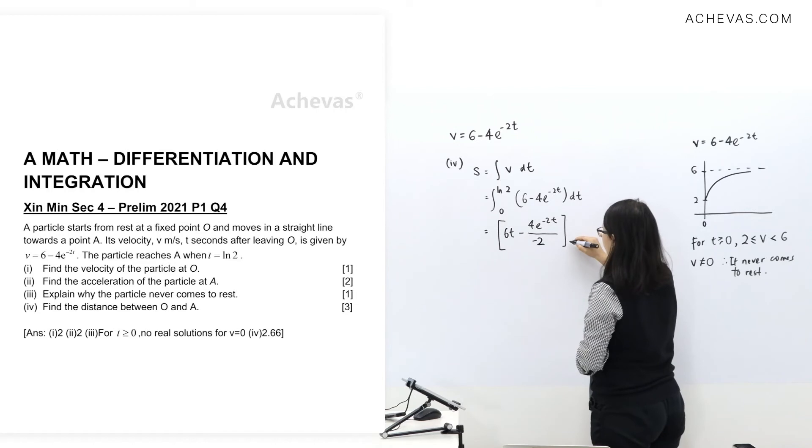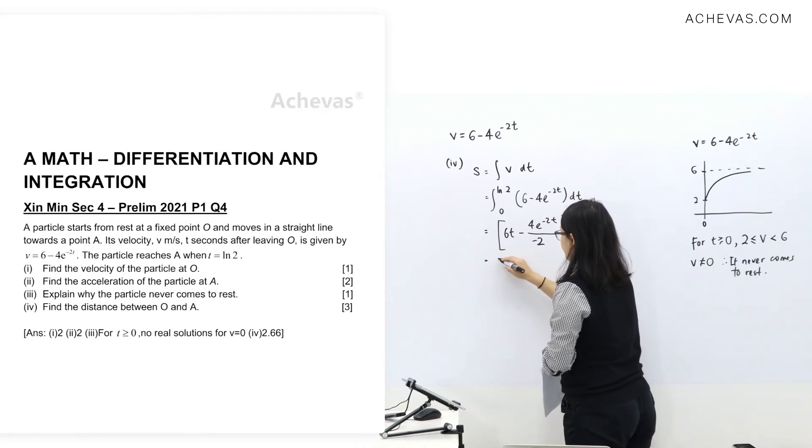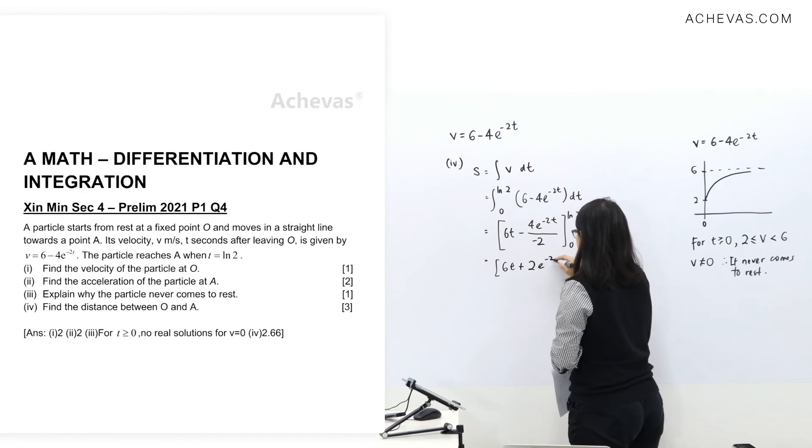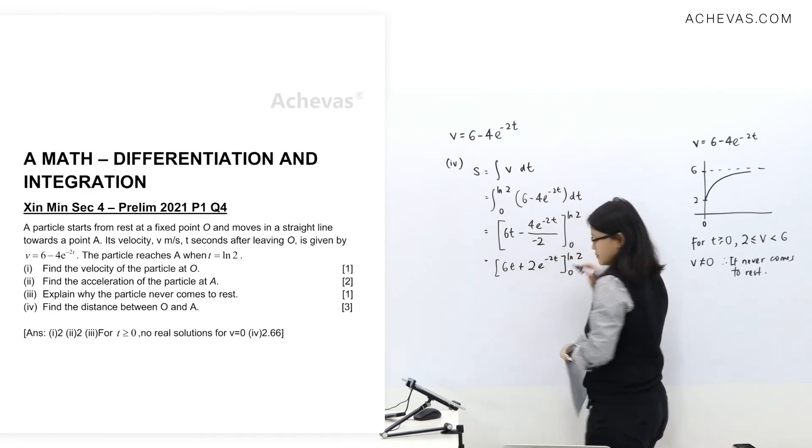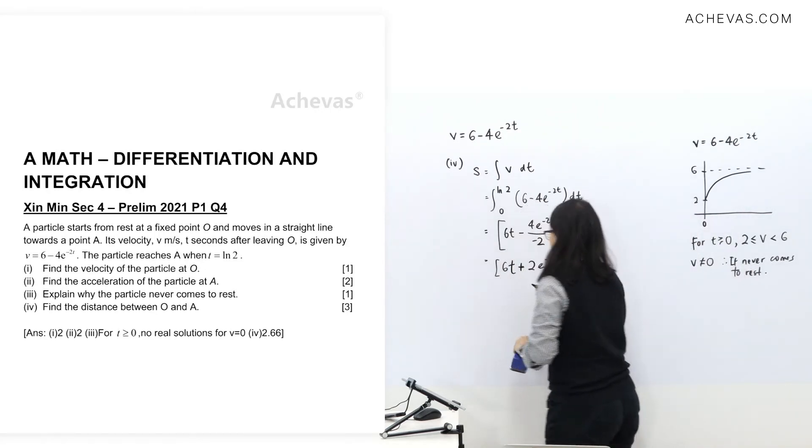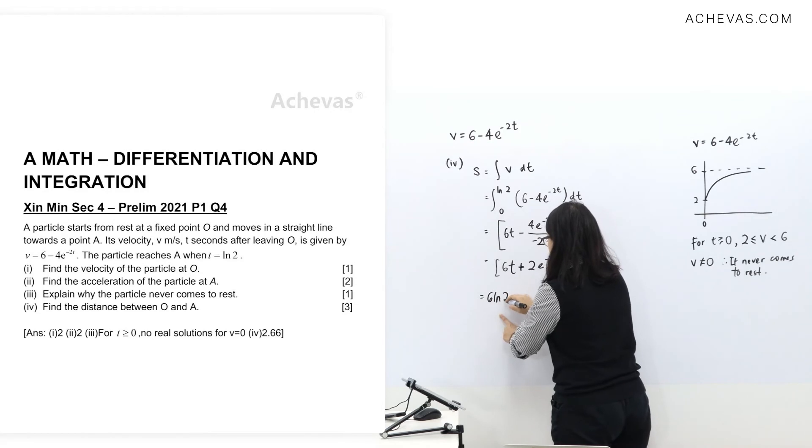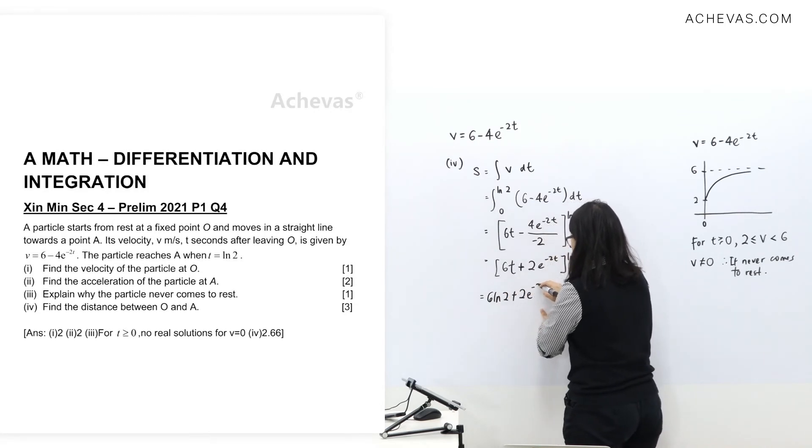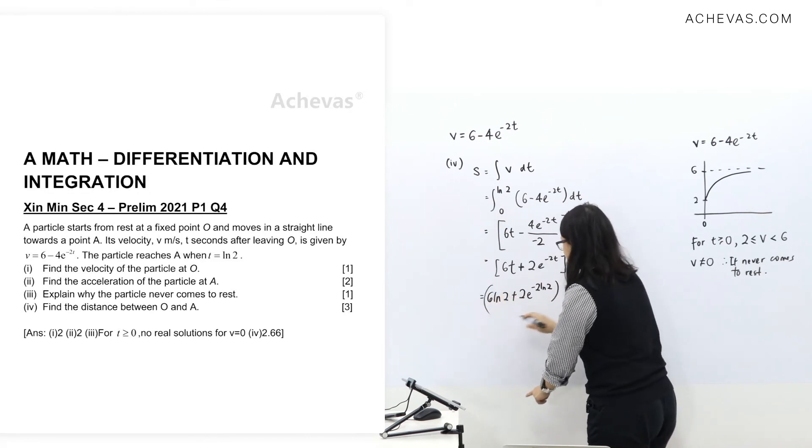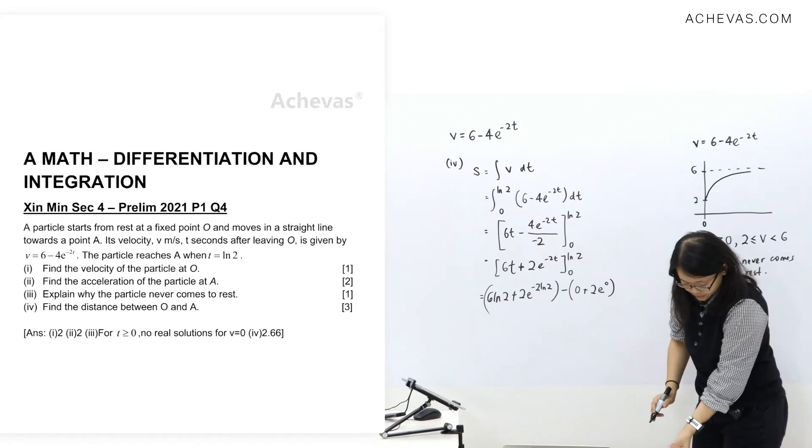And since I have this value here, I don't have to write a constant. I just place a value here. So let's simplify it a bit. We have this. Substituting ln 2 in, and 0.